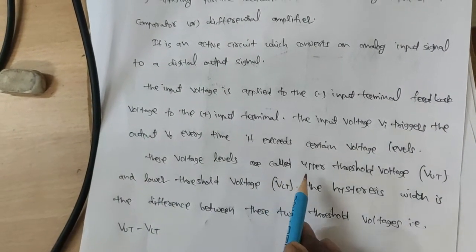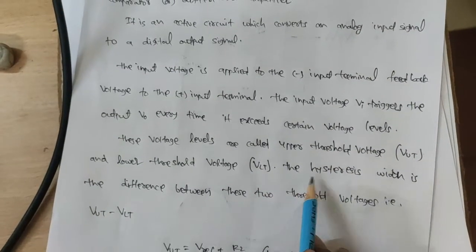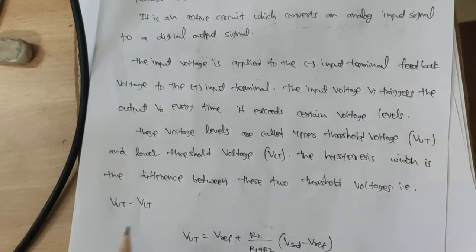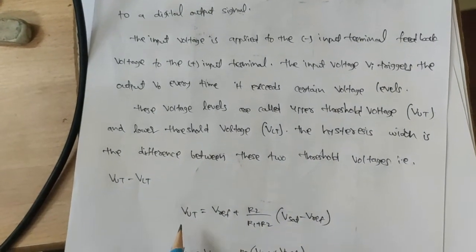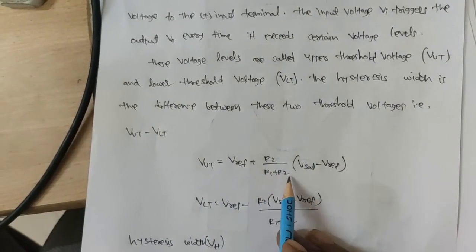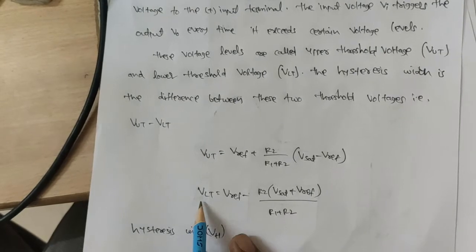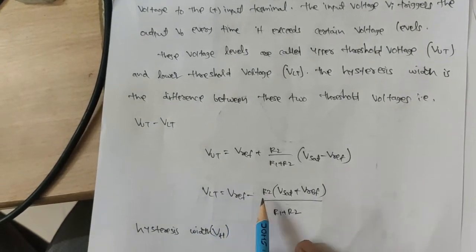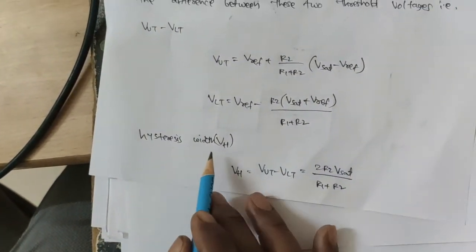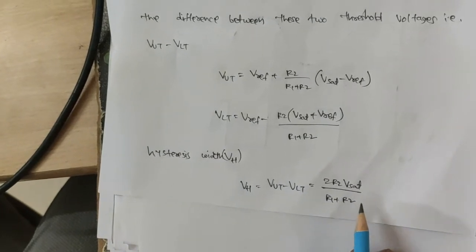The hysteresis width is the difference between the two threshold voltages, that is VUT minus VLT. VUT, the Upper Threshold Voltage, equals V_reference plus R2 by (R1 plus R2) times (Vsat minus V_reference). VLT, the Lower Threshold Voltage, equals V_reference minus R2 times (Vsat plus V_reference) by (R1 plus R2). The hysteresis width VH equals VUT minus VLT equals 2R2·Vsat by (R1 plus R2).